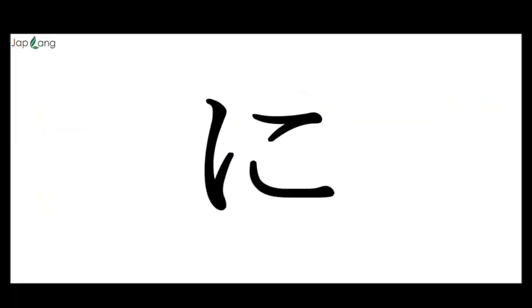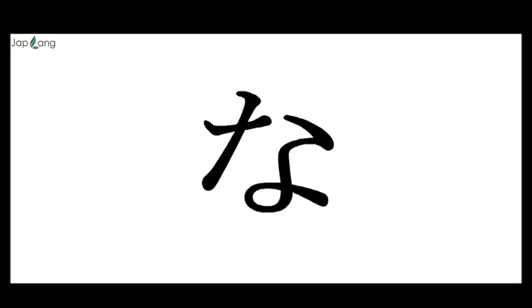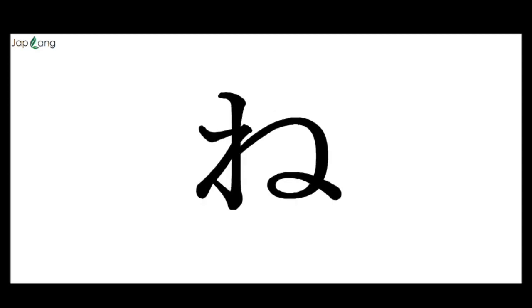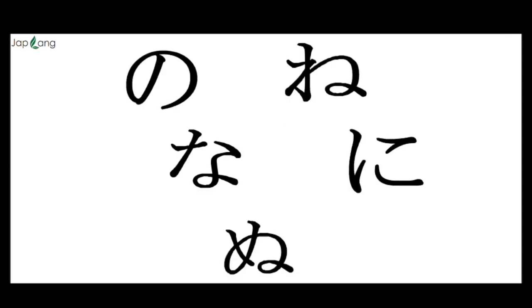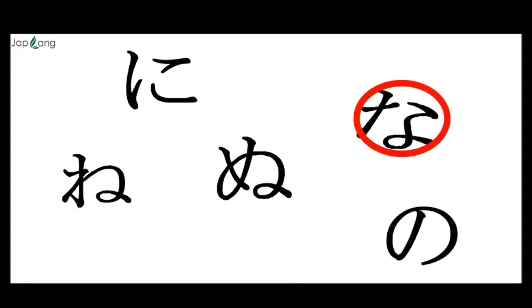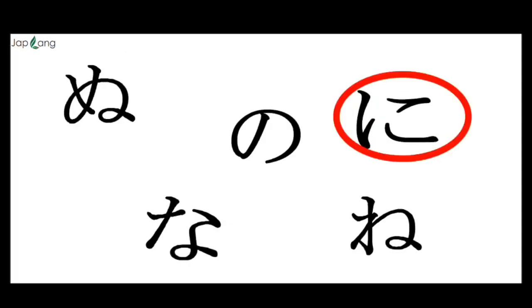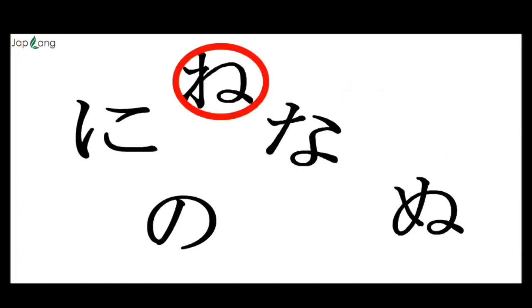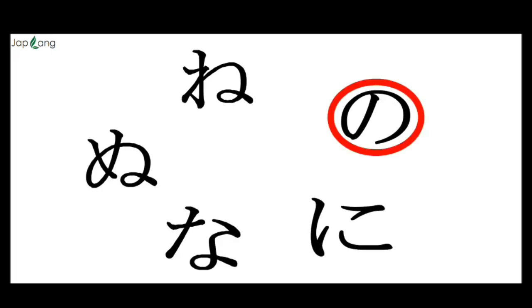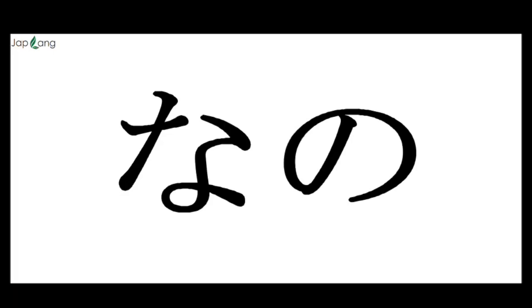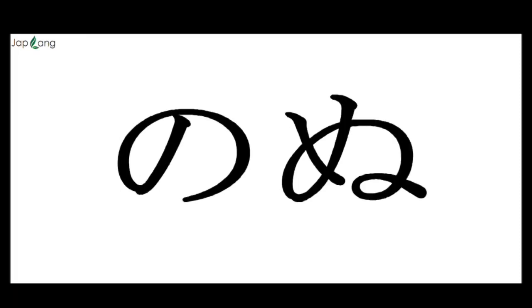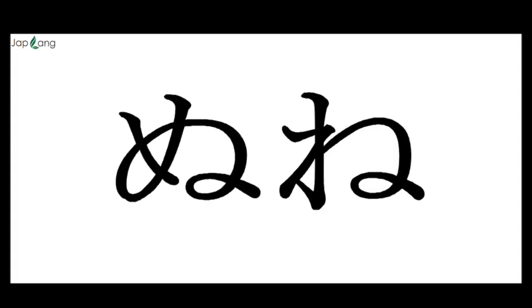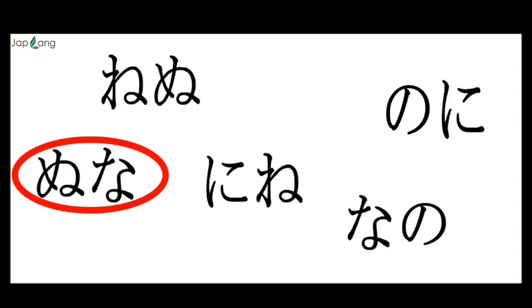Let's have a quiz. Identify each character: NI, NE, NA, NA, NO, NU, NE, NI, NO, NU, NA. Now tell me what each one is: NO, NA, NA, NI, NE, NO, NO — it will be NI, NA, NO, NU, NE, NO.